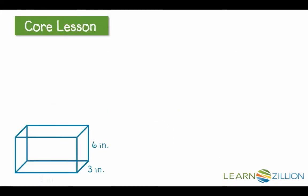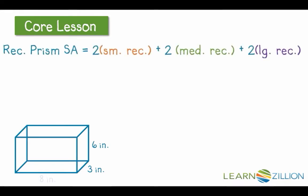When we find the surface area of this rectangular prism, we are going to add up the areas of all six faces. And to save ourselves a little bit of time and energy, we're going to organize our work by first finding the area of the two small rectangles, then adding to that the area of the two medium rectangles, and adding to that the area of the two large rectangles.